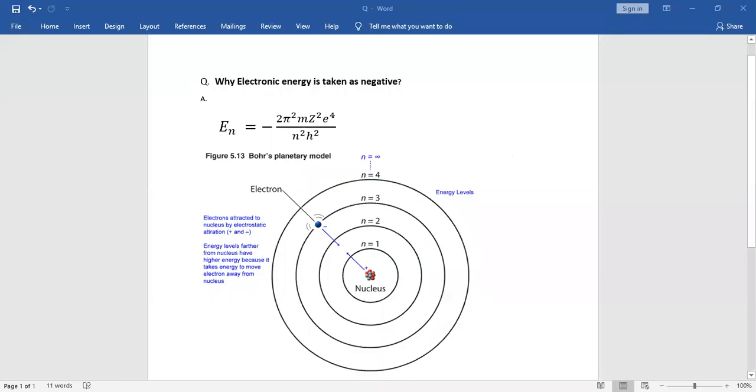Why is electronic energy taken as negative? From Bohr's equation, we see that En equals minus 2π² m z² e⁴ divided by n² h². As we see that energy